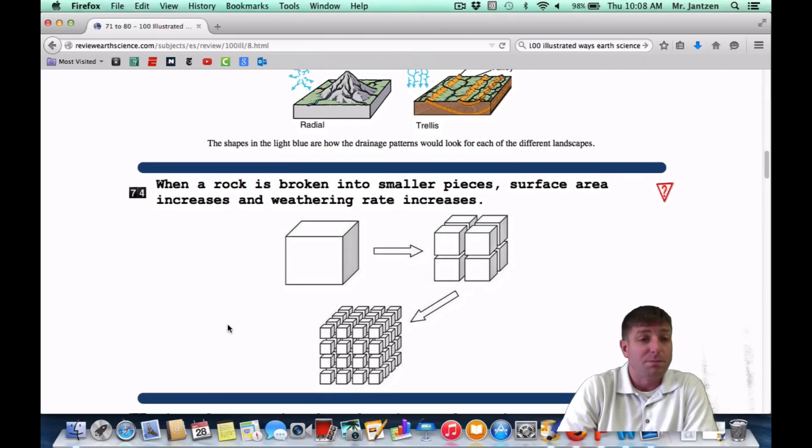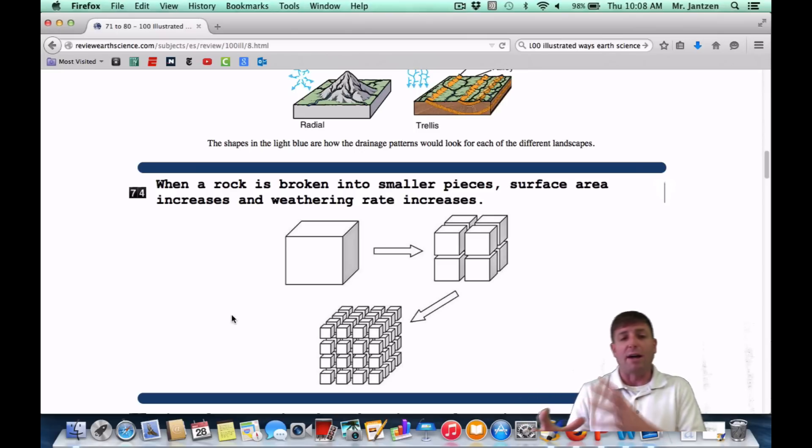Number 74, when a rock is broken into smaller pieces, surface area increases and weathering rate increases. Once again, if you take a boulder and a whole mess of small rocks, the small rocks are going to weather a lot faster because the water can get in there. It can do frost action, expand, break it down. If you have a big solid rock, the water really can't get in there, so it's not going to break it down very fast. So the more surface area you have exposed, the faster the weathering rate. The more sides you have exposed, the faster the weathering rate.